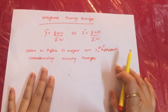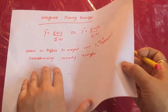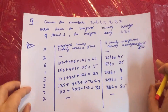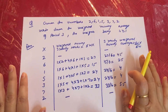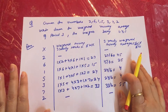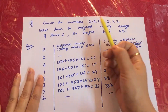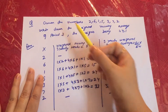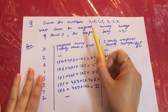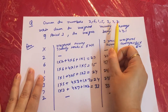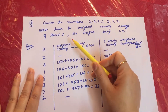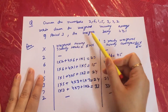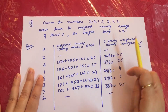Now here is a problem to understand weighted moving average. Given the numbers 2, 6, 1, 5, 3, 7, 2 — write down the weighted moving average of period 3, the weights being 1, 4, 1.